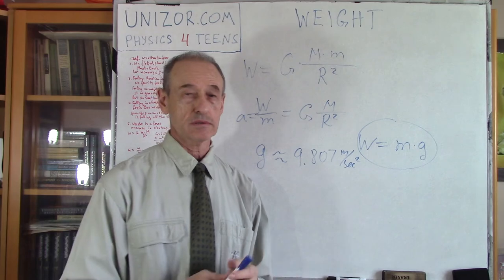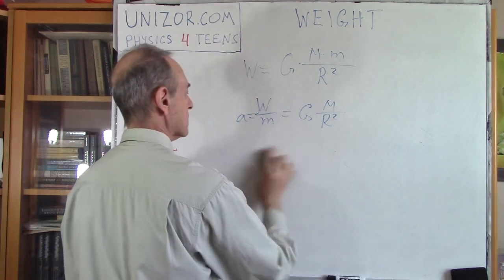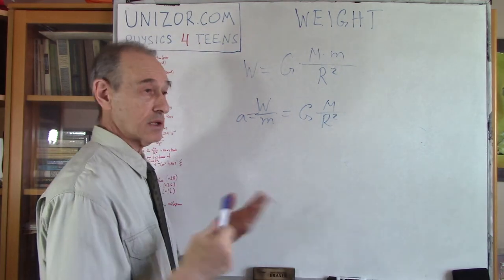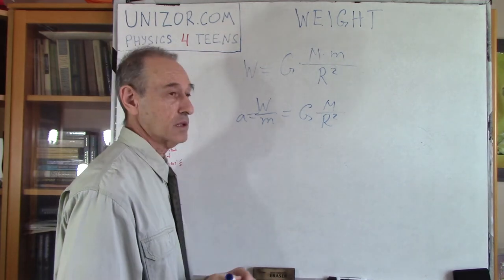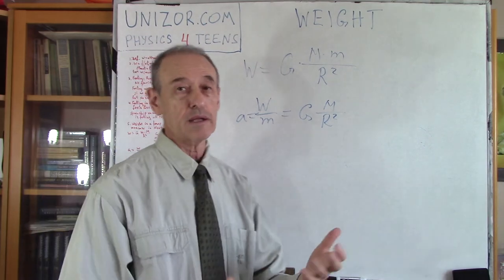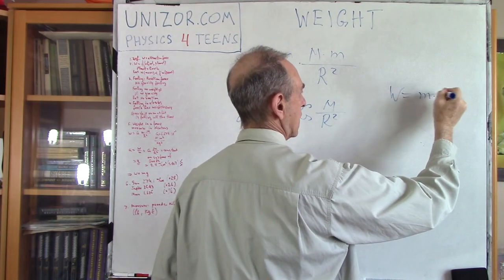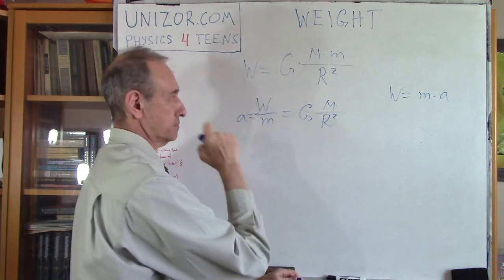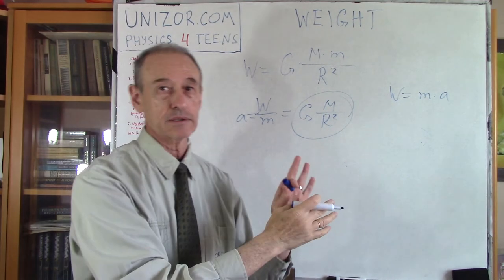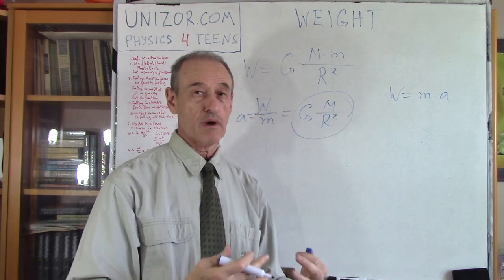How about other planets? For each planet, it has its own mass and its own radius, and obviously we will have a different acceleration of free-fall. Different acceleration results in different weight, since weight equals mass times this acceleration — which is a characteristic of the planet. Weight is a function of both arguments: the mass of the object, and the characteristics of the planet — its mass and radius.